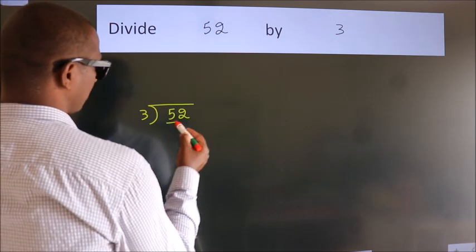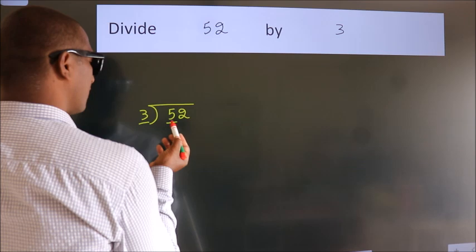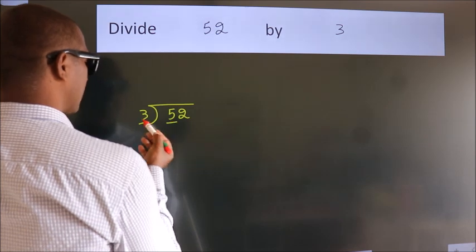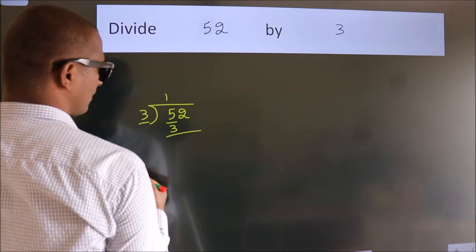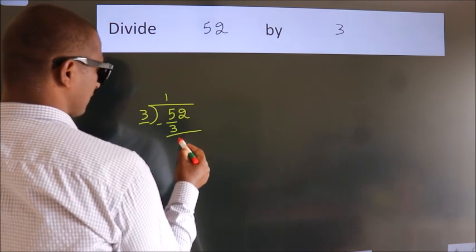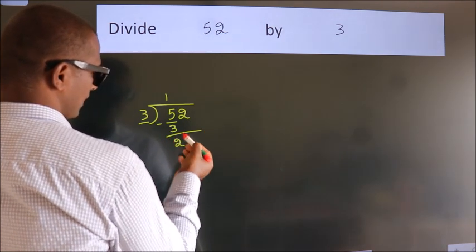here we have 5, here 3. A number close to 5 in 3 table is 3 once 3. Now we should subtract, we get 2. After this,